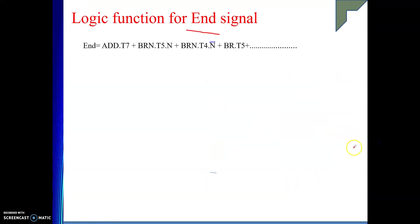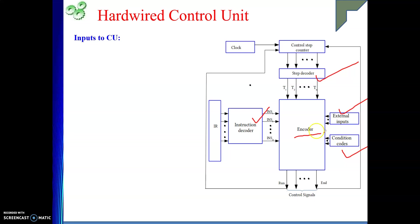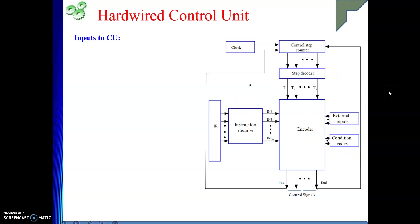Condition codes — you have seen for the AND signal, branch on negative when AND flag is 1 at step number 5, and when AND flag is 0 then at step number 4, the AND signal will be generated. So in some cases, condition codes are also playing a role whenever we are generating a signal. Condition codes are also given as input to the encoder. Whatever diagram I have drawn for the ZDN signal, that is nothing but the encoder's work, and it is taking these things as input.